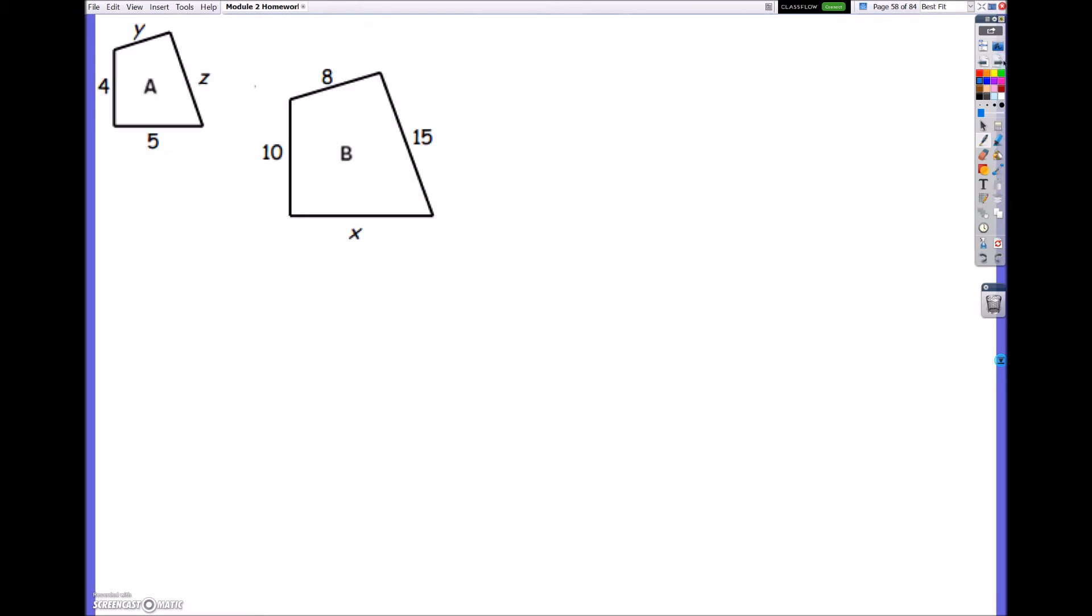All right, now let's go ahead and look at this one. We have two distorted quadrilaterals. And so I need to figure out the missing sides of these proportional sides. So I personally like color coding the same sides. We'll have 10 and the 4 match up. We'll have 8 and y match up. 15 and z. And 5 and x.